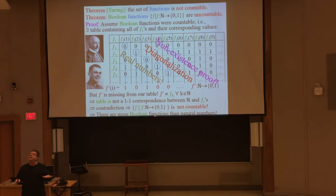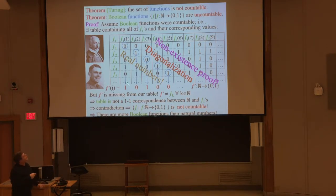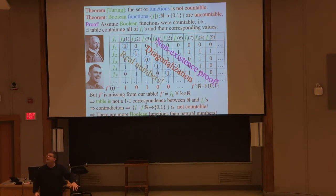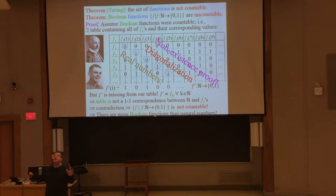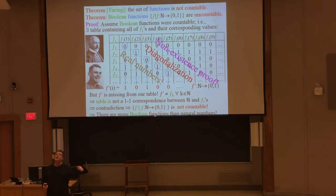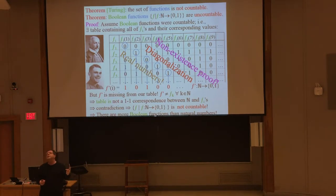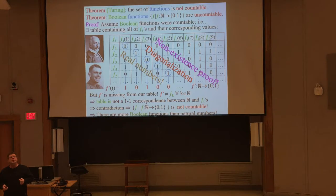You might think: why can't you take the missing function, put it first, move everyone one down — like the infinite hotel — and now it's in the table and the table is fixed? Because you can hit it again with the same diagonalization argument for the new table. You'll have yet another number that's missing. A table like that is fatally flawed — it's beyond repair. So we just proved that there are more functions than there are natural numbers or integers, and there's an infinity of both.